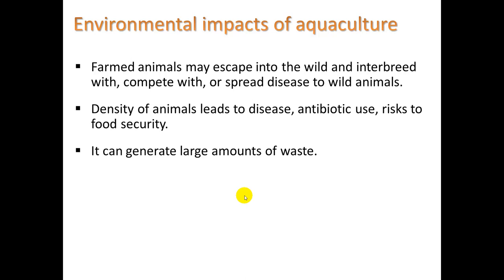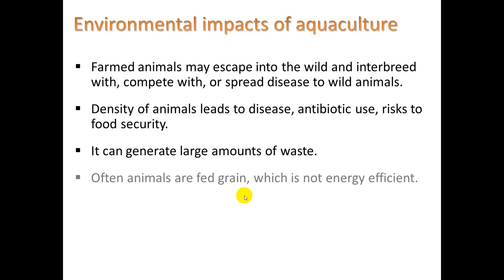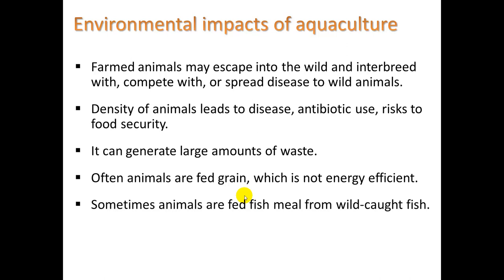Fish produce feces with a lot of nitrates that can go into the water and create imbalances. Often these animals are fed grain, which is not very energy efficient — you have to grow the grain in some field and ship it possibly halfway across the country to a fish farm, which does require fossil fuels. Sometimes the animals are fed fish meal from wild-caught fish: you go out, catch fish not desirable for eating, grind it up, and feed that fish meal to farmed fish of a variety people do want to eat, such as salmon. That doesn't really make sense and is not energy efficient.